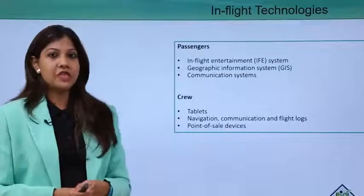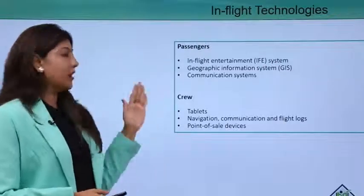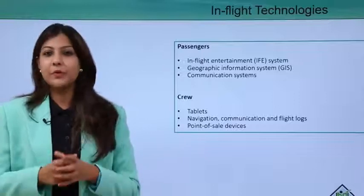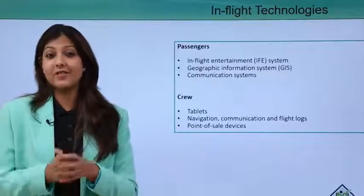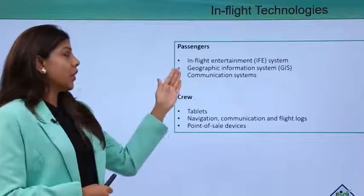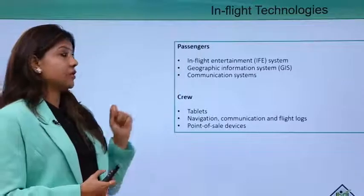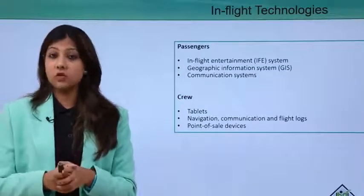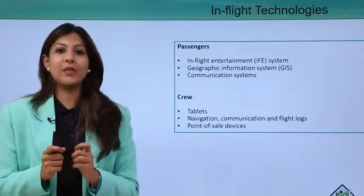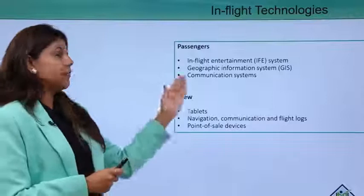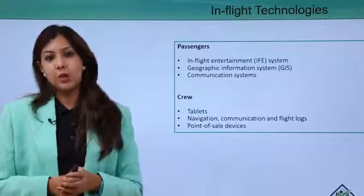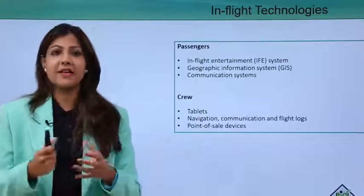For passengers, the inflight entertainment system (IFE) allows them to watch movies, listen to music, and view videos. There is also geographic information — passengers can see their location on a map, track time to destination, and locate themselves via GPS. Communication systems allow passengers to press the call bell to request service from air hostesses for tea, coffee, food, or any other requirement.